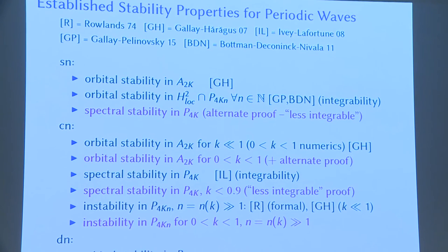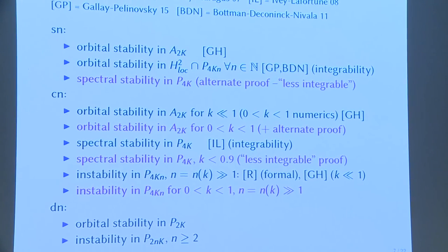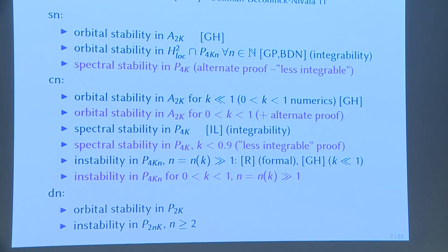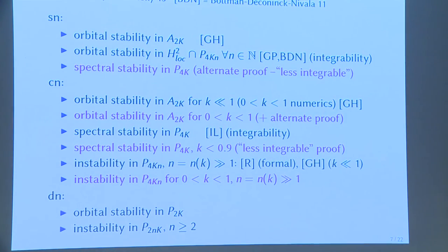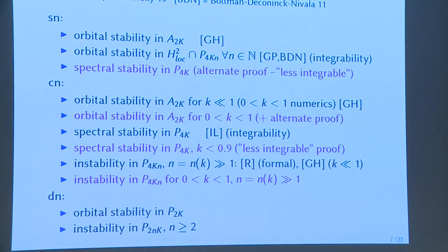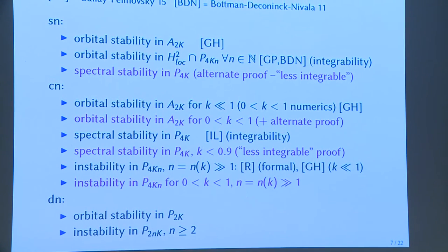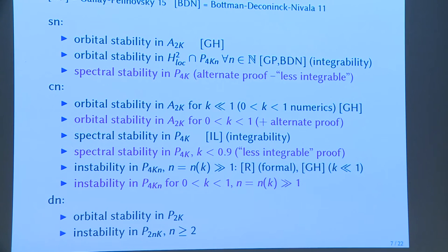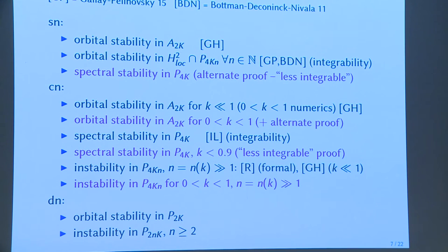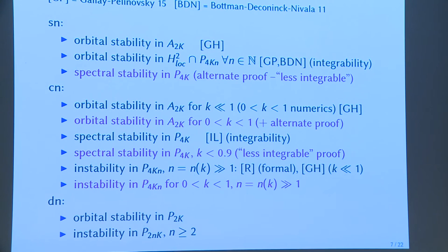For the denoidal wave — the positive solution — its theory is very much like the theory of the usual ground state soliton on the real line because of its constrained minimization property, so it is automatically orbitally stable with respect to same-period perturbations. It is very easy to show it is unstable against higher-multiple perturbations.